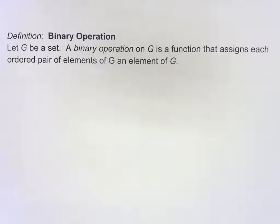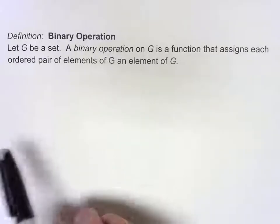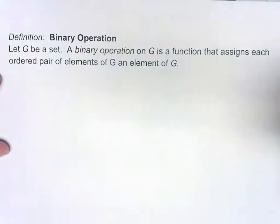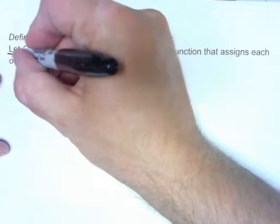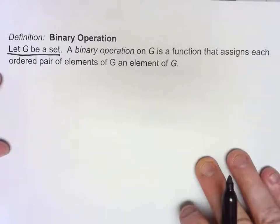The order could possibly matter. We already saw that with our symmetries of the square group, but let's take a look at a few other examples. Now it's important to realize that when we're doing this we have to define what our set is. Certain operations are binary operations on one set, but take the same exact operation with a different set, it's not a binary operation.